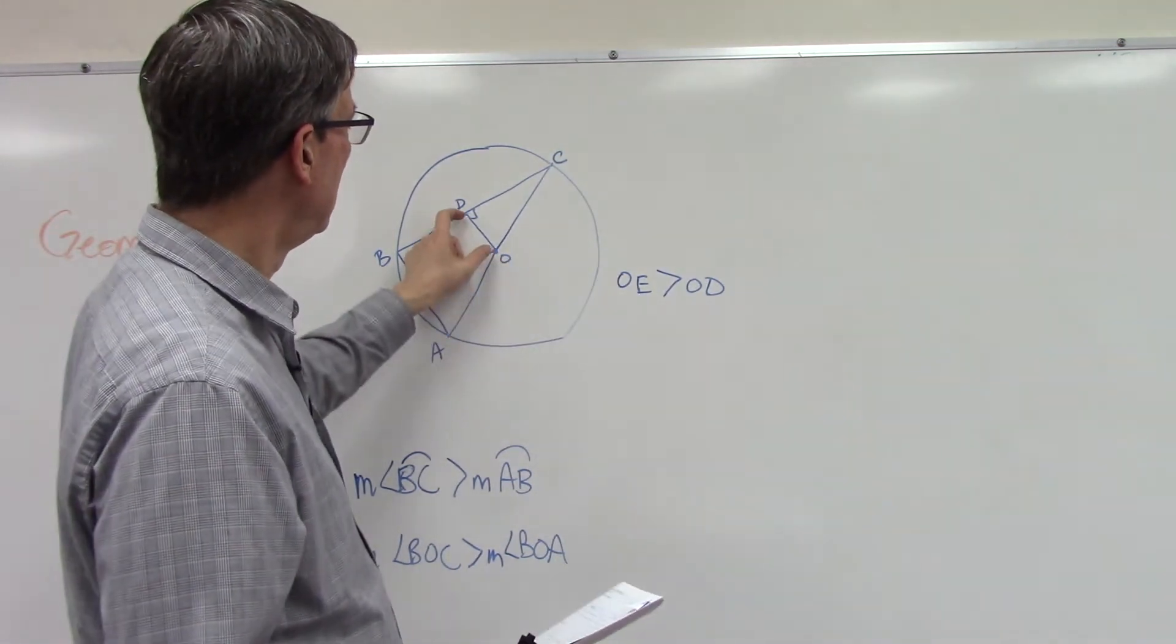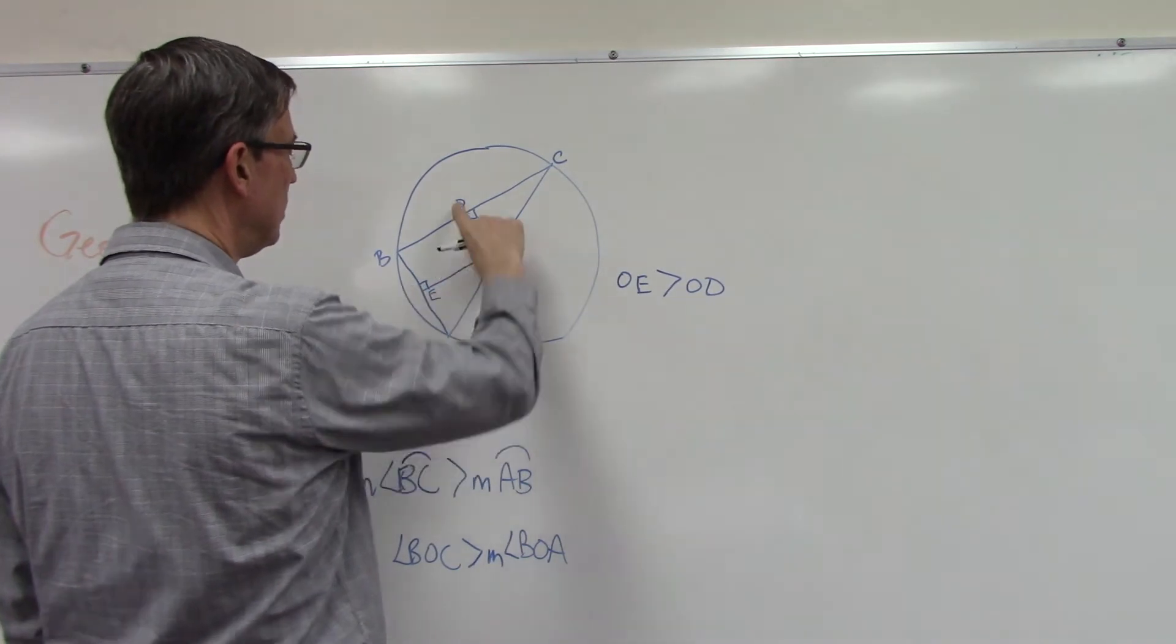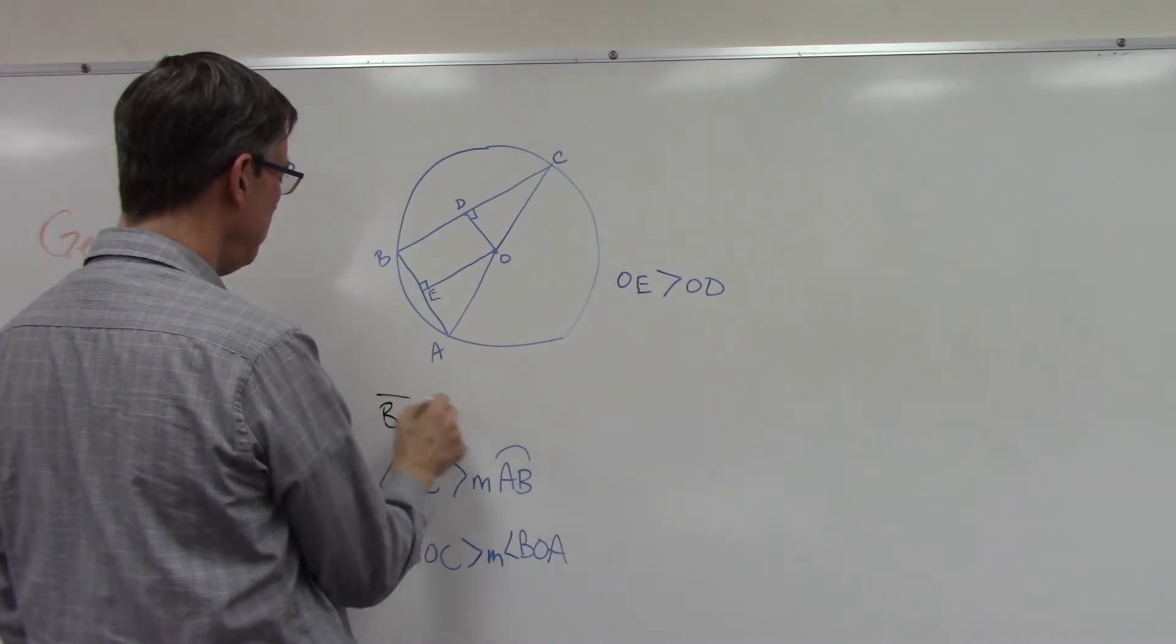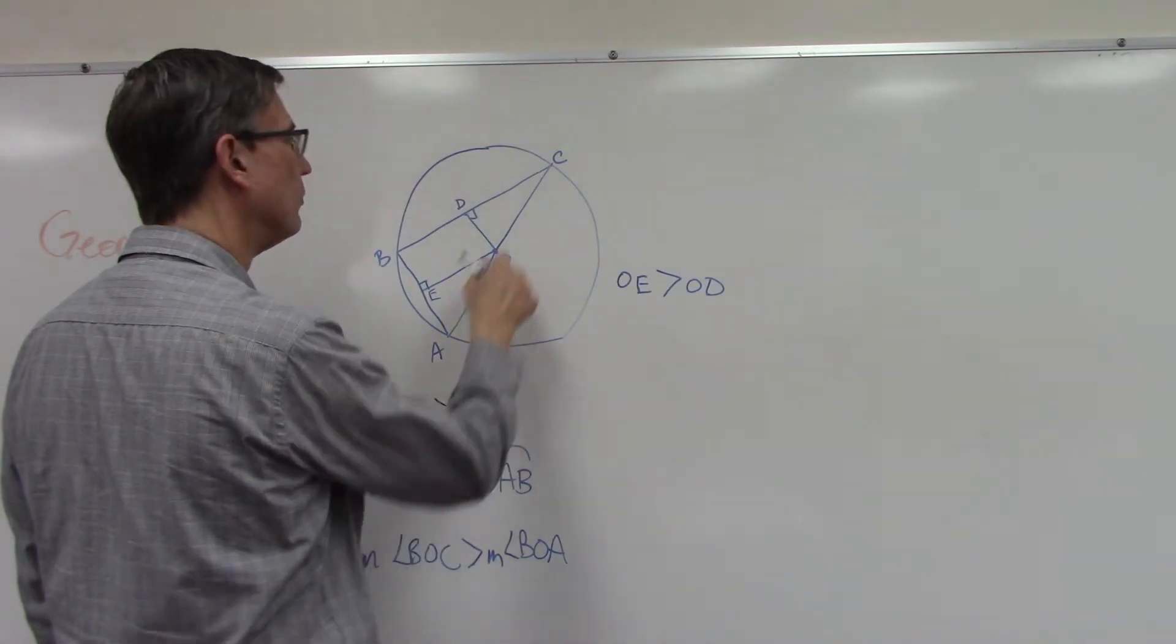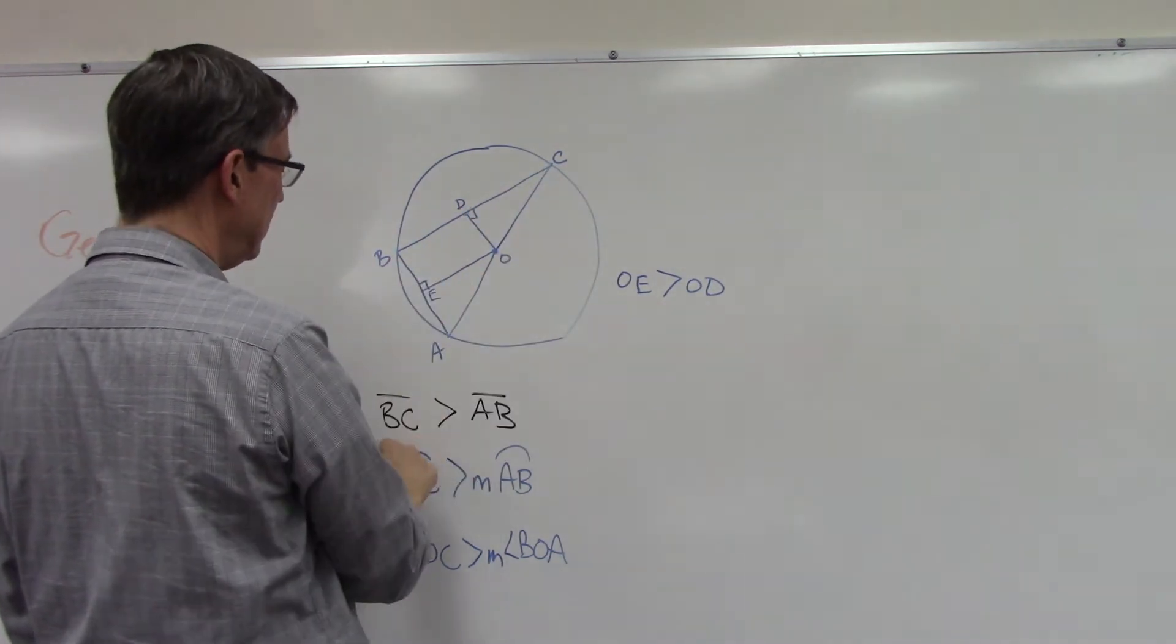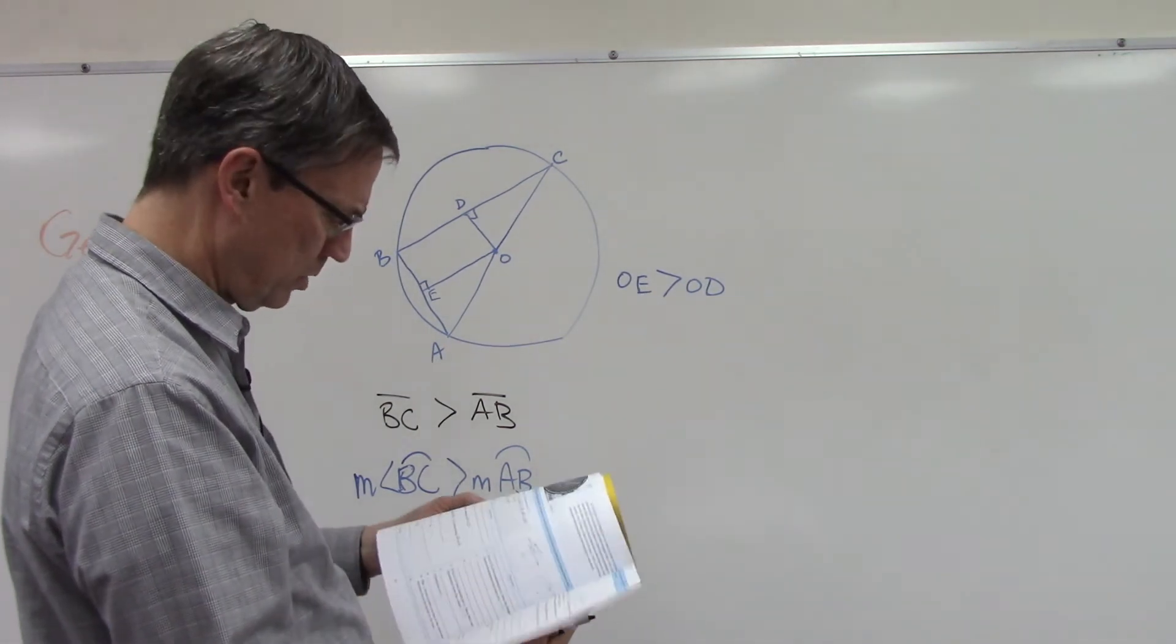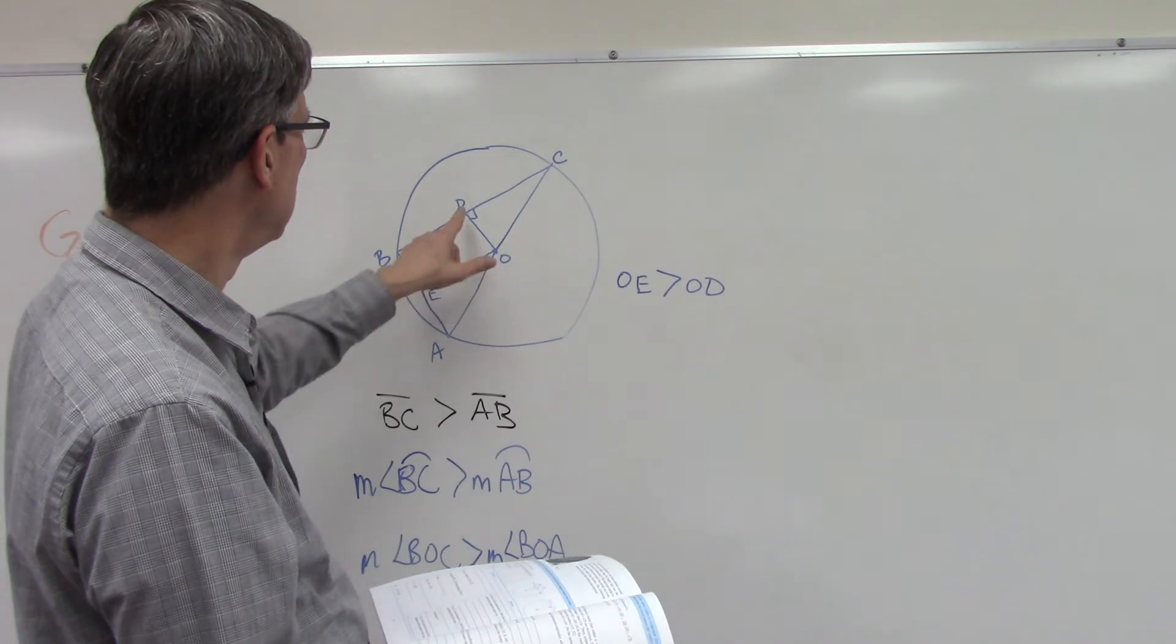They tell us that OE is greater—it's longer than OD. Since this distance is longer than this, can we say that chord BC is greater than chord AB? Since this one is closer to the center, this chord must be longer if you look back at the theorems.